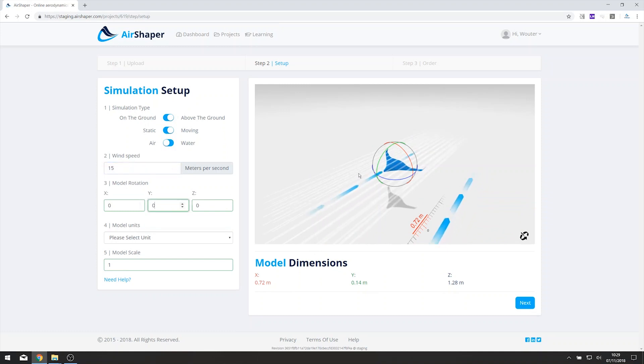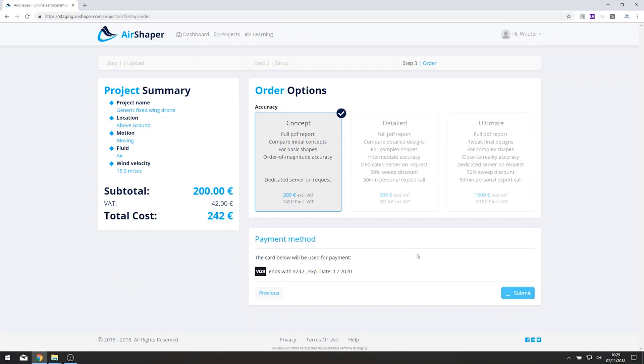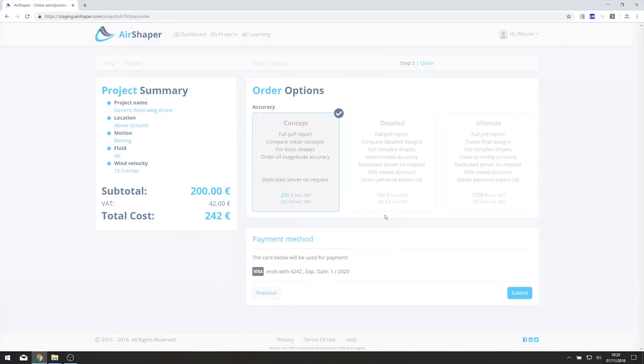Let's give it a velocity of 15 meters per second, and to trigger some more dramatic flow, I want to rotate it upwards with the nose in the air at an angle of attack of 15 degrees. The model was done in meters, and then just click the next button and order the simulation.